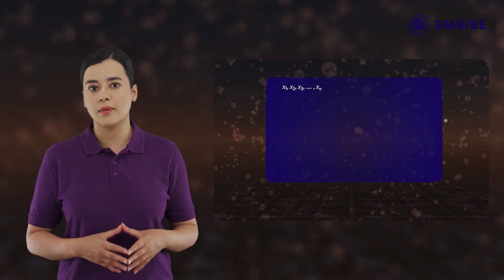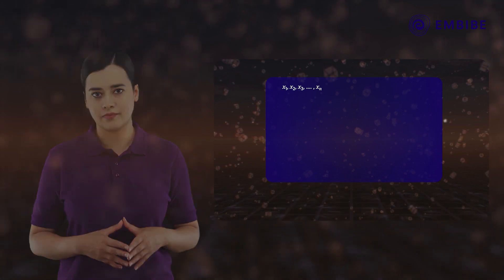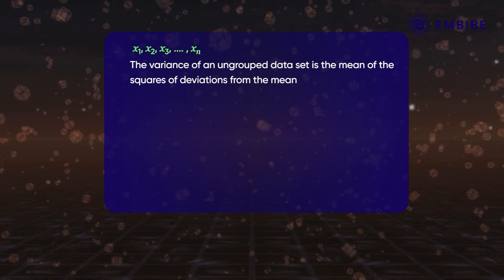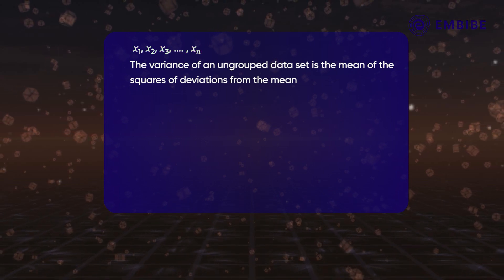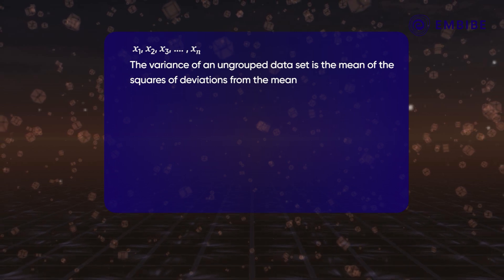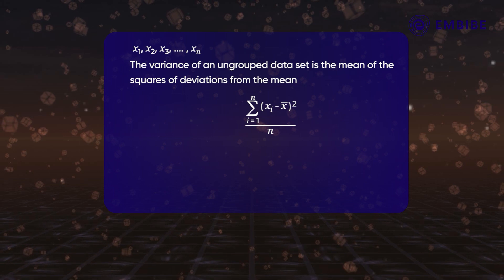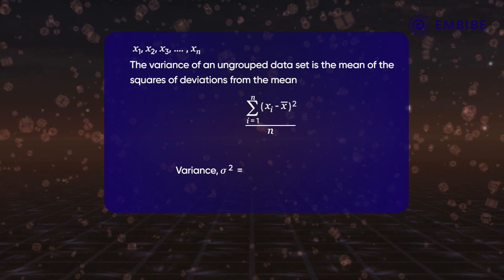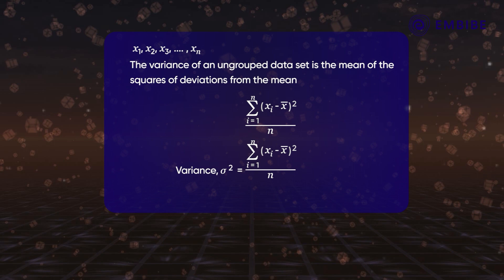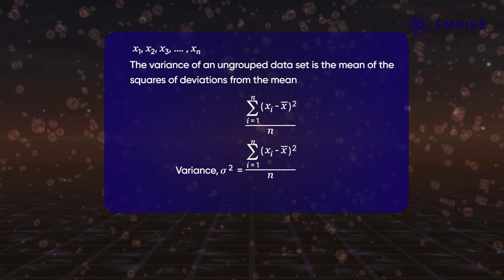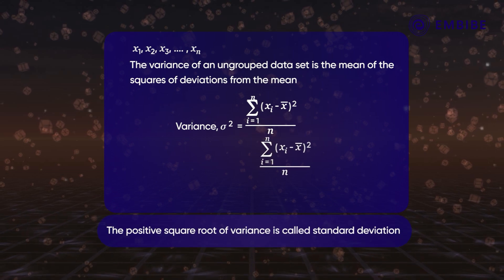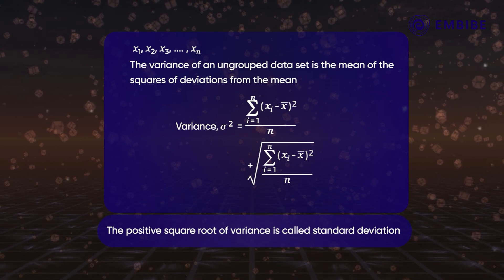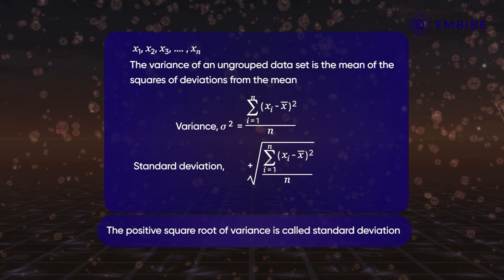You might have already learnt about the variance and standard deviation of an ungrouped data set. The variance of an ungrouped data set x1, x2, x3 up to xn is the mean of the squares of deviations from the mean, and is denoted by sigma squared. That is, variance sigma squared equals the sum from i=1 to n of (xi minus x̄)² divided by n. The positive square root of variance is called the standard deviation and is denoted by the Greek letter sigma.